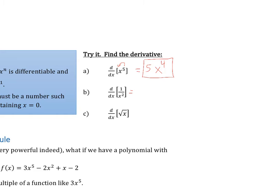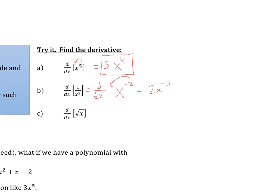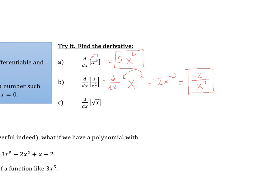For example: derivative of x to the fifth — drop the five down to get 5x to the fourth. What if we have x in the denominator, like 1 over x squared? Rewrite it as x to the negative two. Then the derivative gives us negative 2x to the negative three. We always want to write our final answer with positive exponents, so we take that negative exponent back downstairs.